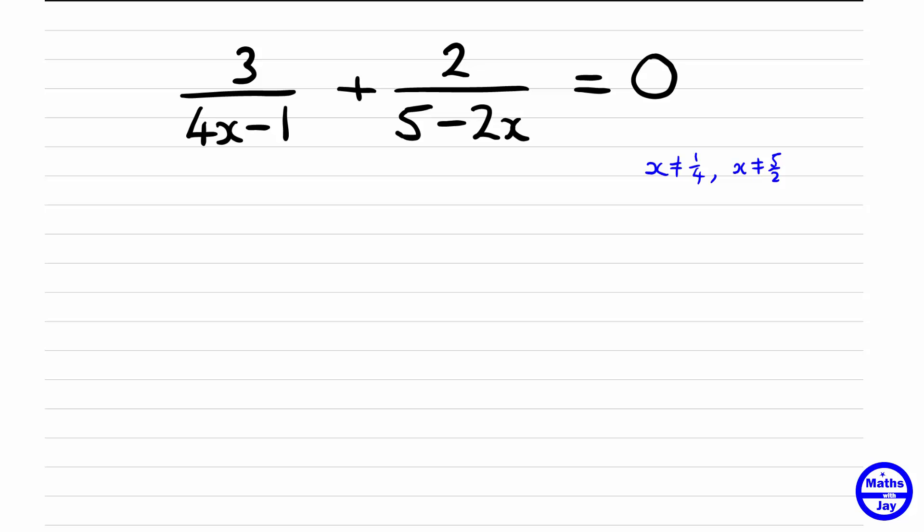Otherwise, fairly straightforward to do. Just as with any other fractions in equations we multiply through by each denominator. You could do them both at the same time or if you're new to this just do them one at a time. So let's multiply each fraction and the right-hand side by 4x minus 1 to start with.